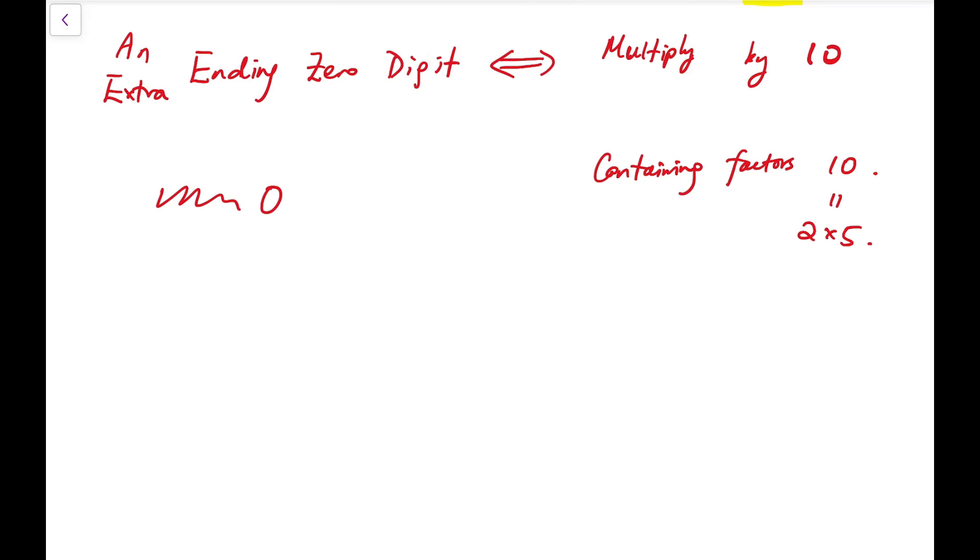So that means whenever I multiply some extra number, and inside that particular number it contains some prime factor 2 or prime factor 5, whenever I can gather a pair of such prime factors, you can imagine there are lots of 2s and 5s around. Whenever I can gather one pair, I'm good to go. One extra zero here, one extra zero there, and so on.